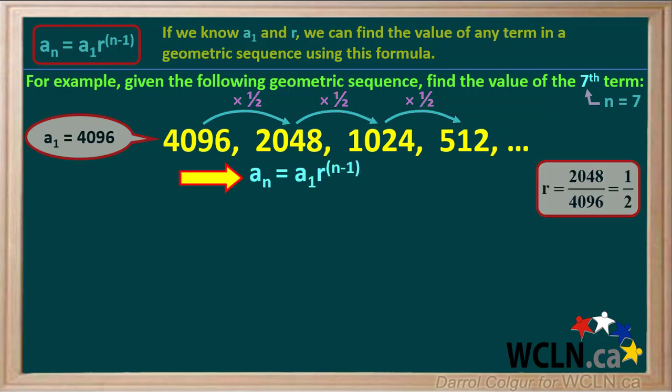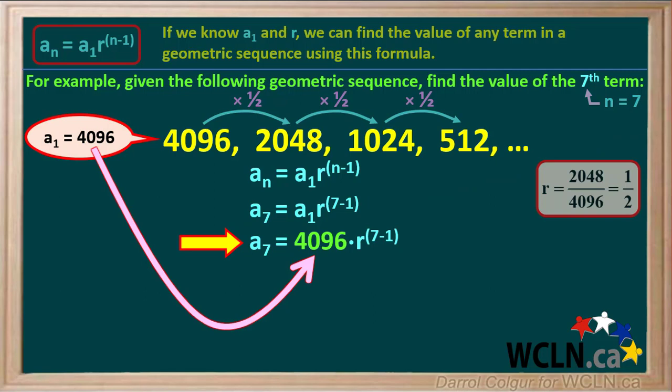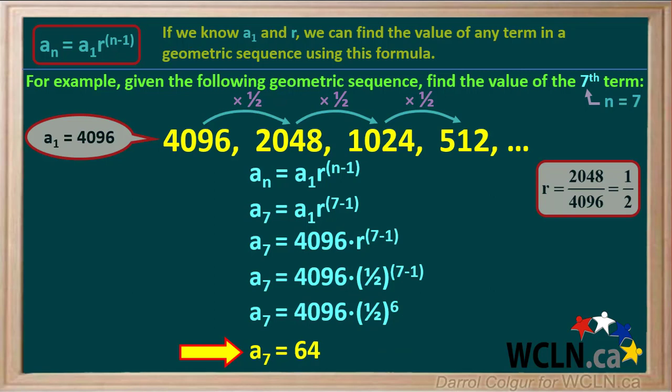Now we have all we need. We'll write down the formula aₙ equals a1 times r to the power n minus 1. n equals 7, so we'll replace the two n's in the formula by 7's. The value of the first term, a1, is 4096. r equals 1 half. 7 minus 1 equals 6. 4096 times 1 half to the power of 6 is equal to 64. You might want to pause the video and check this on your calculator. Finally, we can state that the value of the seventh term is 64.